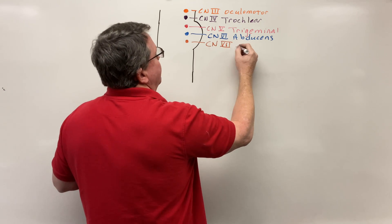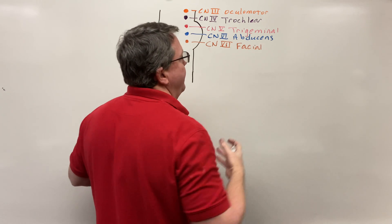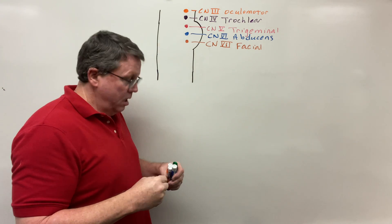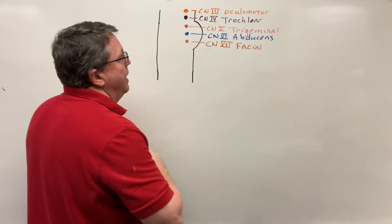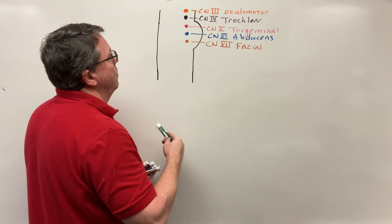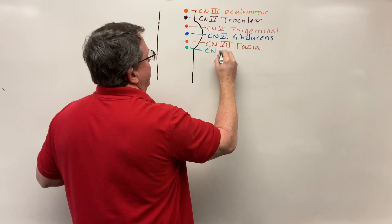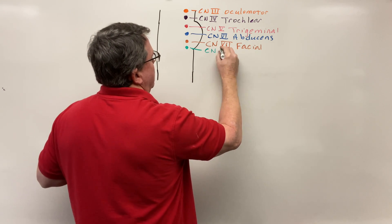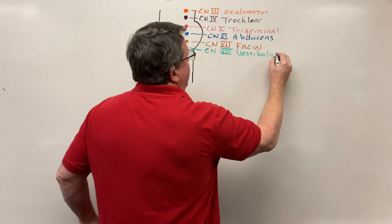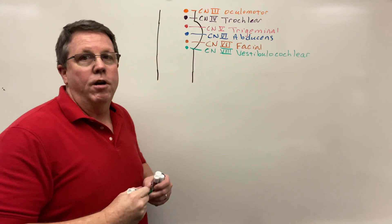We also talked about cranial nerve 7, the facial nerve, which moves the muscles of the face and carries taste from the anterior two-thirds of the tongue among other functions. Then cranial nerve 8, the vestibulocochlear nerve, is responsible for hearing and balance.